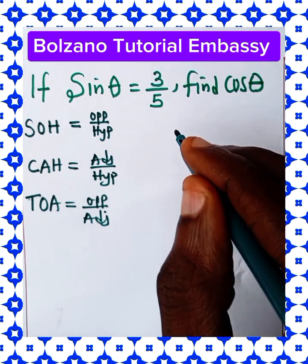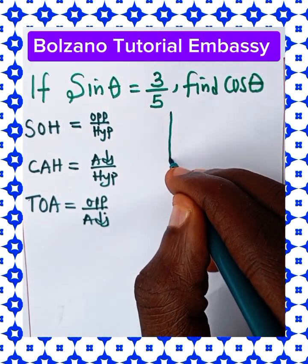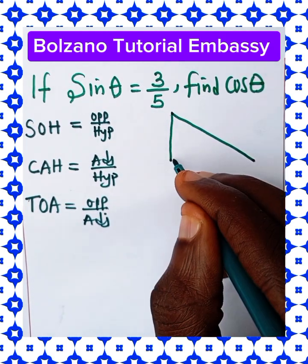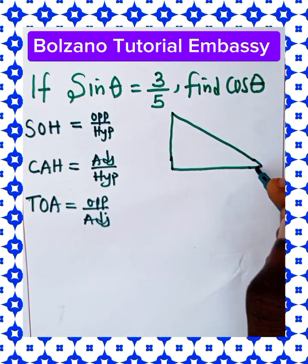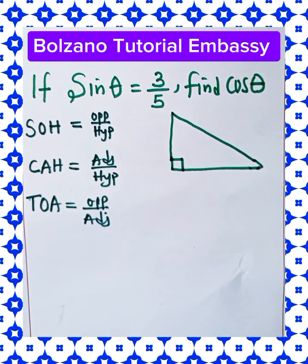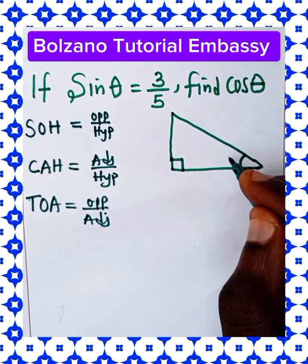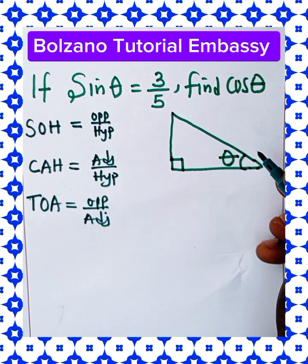So we have a right angle triangle like this. This is angle 90 degrees. And let's say this is the required angle, theta.